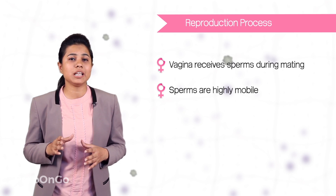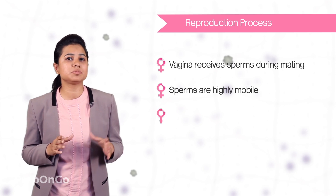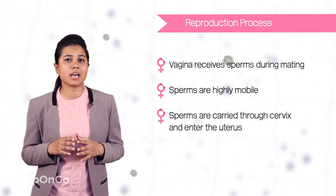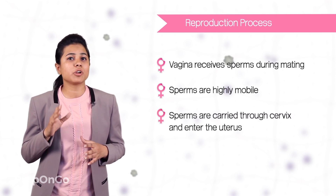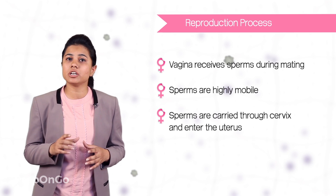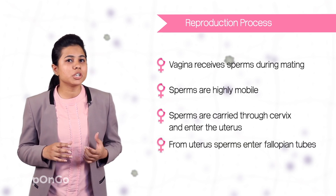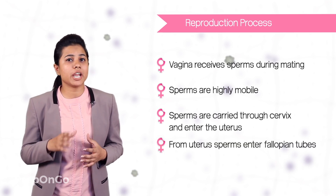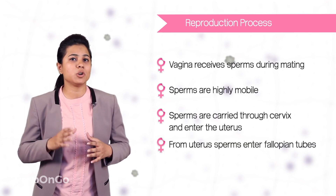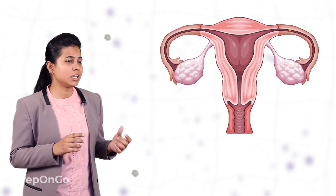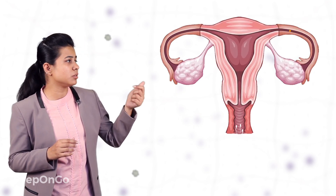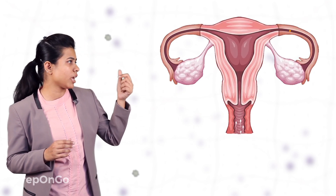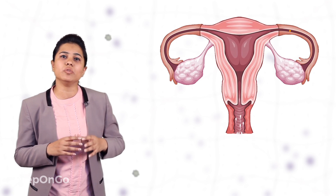Once released, these sperms are carried through the cervix and from there they enter into the uterus. From the uterus, they enter into the fallopian tube, like you can see here how these sperms are carried through the oviduct.